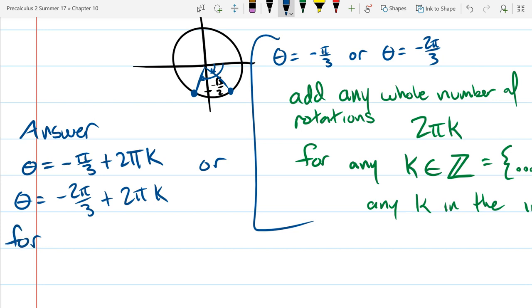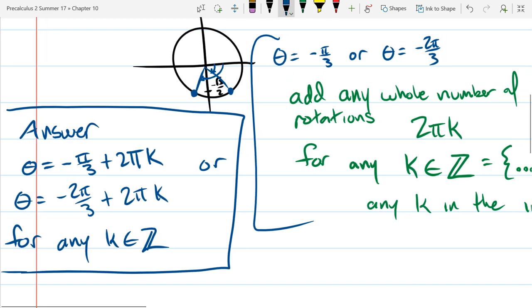and then you need to say where k comes from, for any k in Z. So that's how we'll write our answer down for this in a much more compact way.